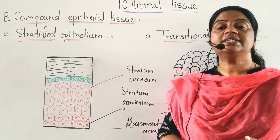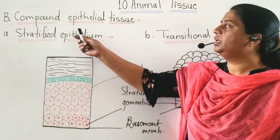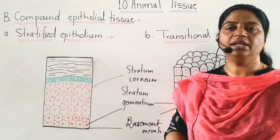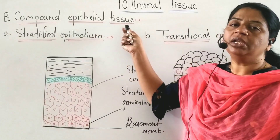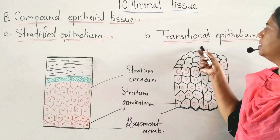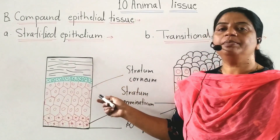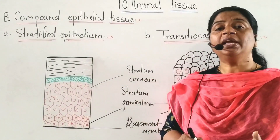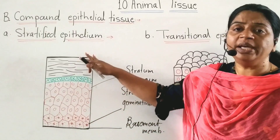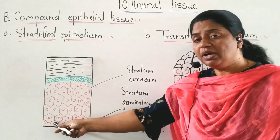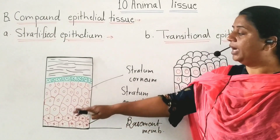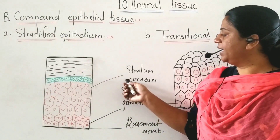The second type of epithelial tissue is compound epithelial tissue. Simple epithelial tissue has seven types. Compound epithelial tissue is divided into two types: stratified epithelium and transitional epithelium. Compound epithelium means not a single layer — they have more than two layers. Only one layer rests on the basement membrane, called stratum germinativum, and the layers above are called stratum corneum.